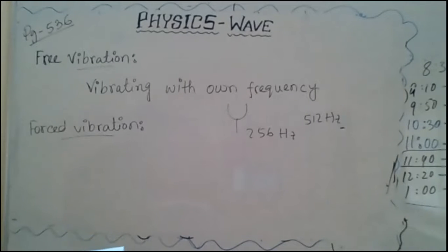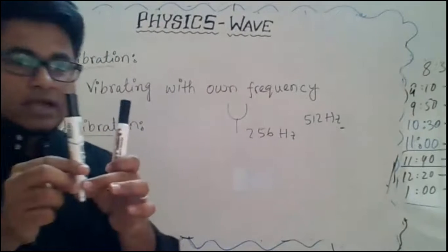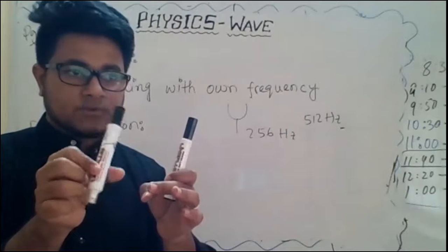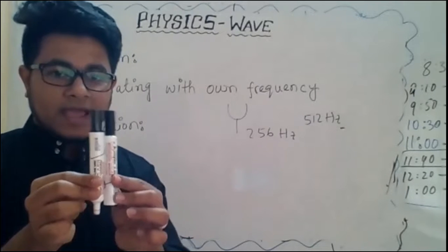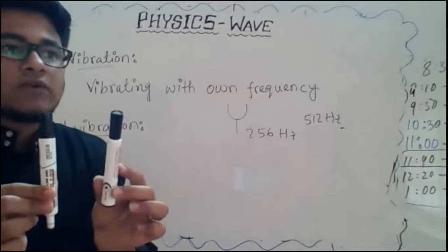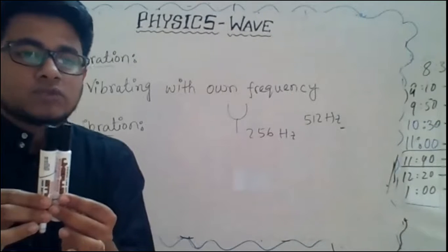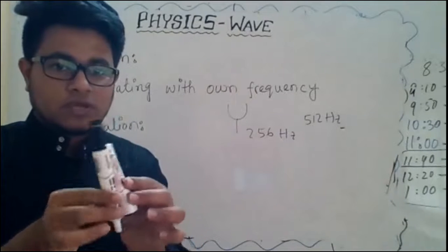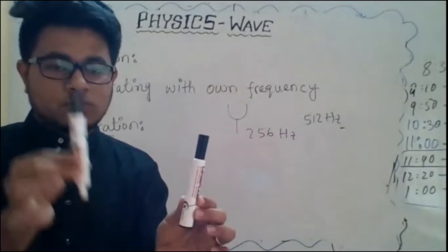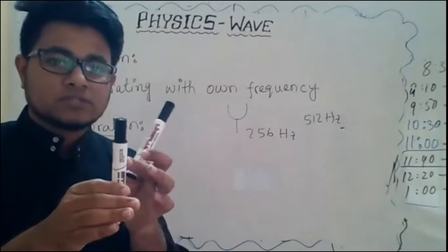Now, what is forced vibration? If a body is made to oscillate by applying a periodic force — let us think about this. Say I have two markers. Both of them have their own frequency. Now, if I hit one marker and it starts vibrating, and I bring the second marker which was not vibrating closer to it, the second marker will first try to vibrate with its own frequency — because everyone tries to vibrate at their own frequency — but it will not be able to, because it is now under the influence of the first one.